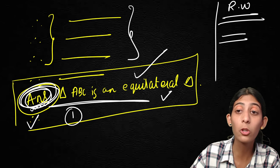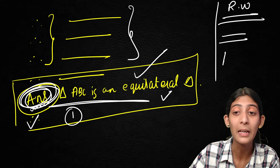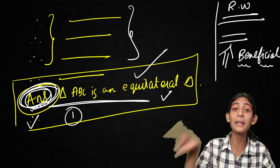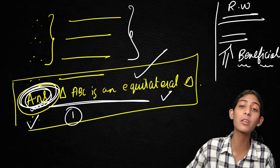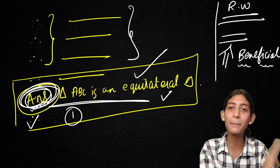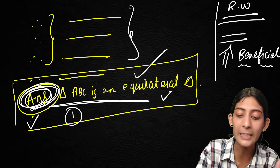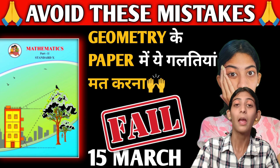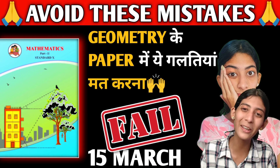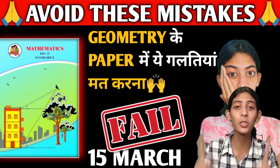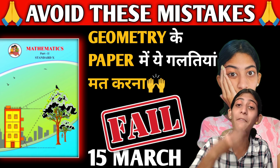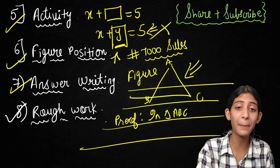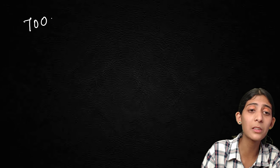The sixth point is figure position. Many children draw the figure incorrectly on the page — for example, placing the figure right on the margin lines. You must not do that. You need to leave 2–3 separate lines and then start the figure. Figure position matters — the answer starts here and you have to write the proof after the figure position.